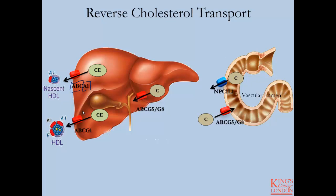As HDL particles begin to increase in diameter and size, they will then begin to associate with ABCG1, which is primarily responsible for recognizing lipid-rich HDL particles and further increasing their cholesterol content through direct transport from inside the cell externally to the HDL particle. These proteins are present in other tissues throughout the body, and we will discuss them primarily as transporters of cholesterol in macrophages.